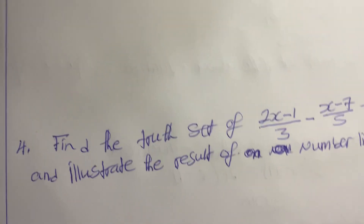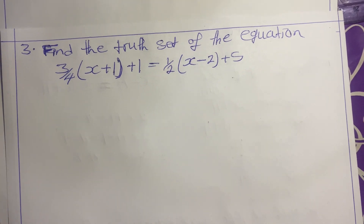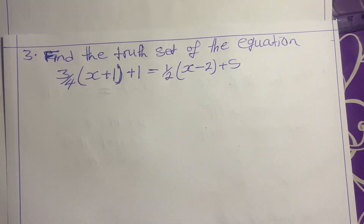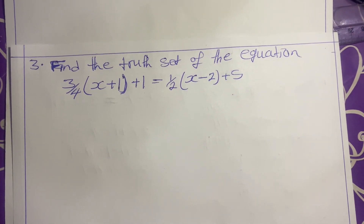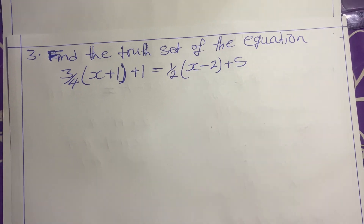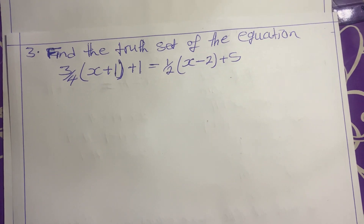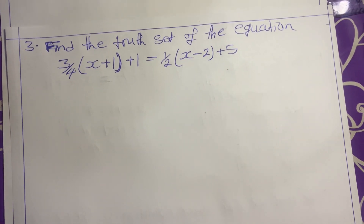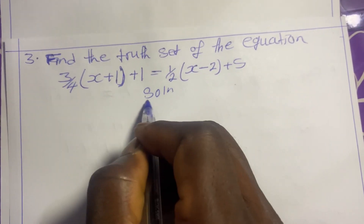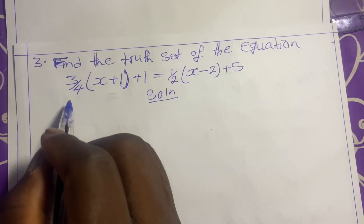Example 3: find the truth set of (3/4)(x + 1) + 1 = (1/2)(x − 2) + 5. This involves both brackets and fractions. When there are fractions, deal with the fractions first by finding the LCM. If there are no fractions, deal with the brackets first, expand, and solve.